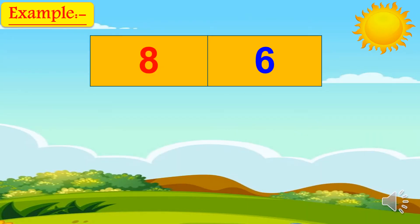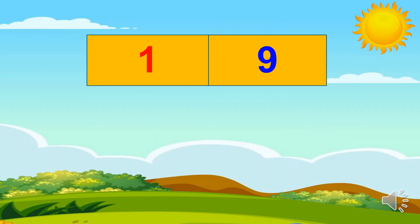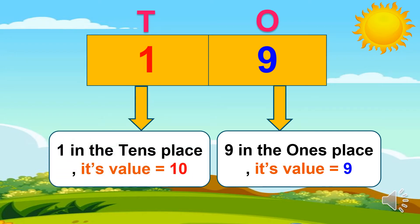Let's answer an example to make it easy. We have number eighty-six. I put my places: ones and tens. Six in ones — in ones, no zeros, so six its value is six. Eight in tens — in tens we put a zero, so its value is eighty. Next example: number nineteen. Value of nine in ones — no zero, so its value is nine. One in tens — put a zero, so its value equals ten.